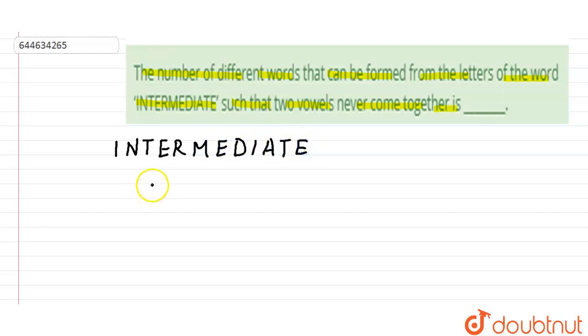So I, N, T, E, R, M, then E, D, I, A, T, and E. These are repeating: INTERMEDIATE. Now we have to arrange our words such that no two vowels will come together.